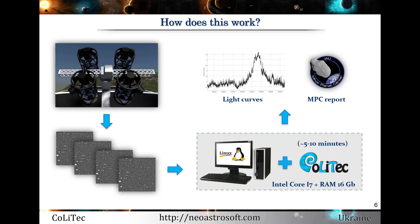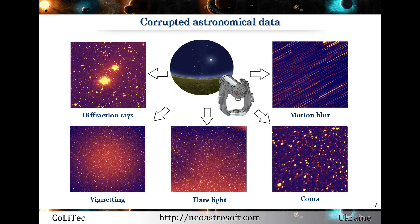On this slide, you can find the very brief sequence of the online processing. Images are saved from the telescope, then processed by the Kalytec software in different modes, and we can get necessary results as light curves and appropriate reports. There are a lot of types of telescope aberrations that can corrupt astronomical data — for example, diffraction rays, motion blur, vignetting, flare light, coma, and others.